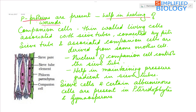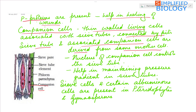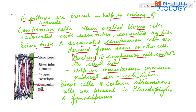Associated with the sieve tubes are one or more companion cells. These are thin-walled living cells that are connected to the sieve tubes by pits. The sieve tube and its associated companion cells are derived from the same mother cell, and it is the nucleus of the companion cell that controls the sieve tubes. The companion cells help in maintaining pressure gradient in the sieve tubes for conduction of food.